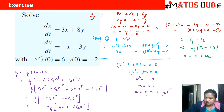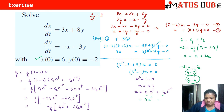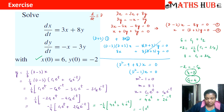Subtracting equation A from equation B: (c₁ + 2c₂) − (c₁ + c₂) = 8 − 6, so −c₂ = −2, giving c₂ = 2. Substituting back gives c₁ = 4. Therefore the final values are: x = 4e^t + 2e^(−t), and y = −(1/4)(4e^t + 4e^(−t)) = −e^t + e^(−t). These are the complete solutions for x and y.